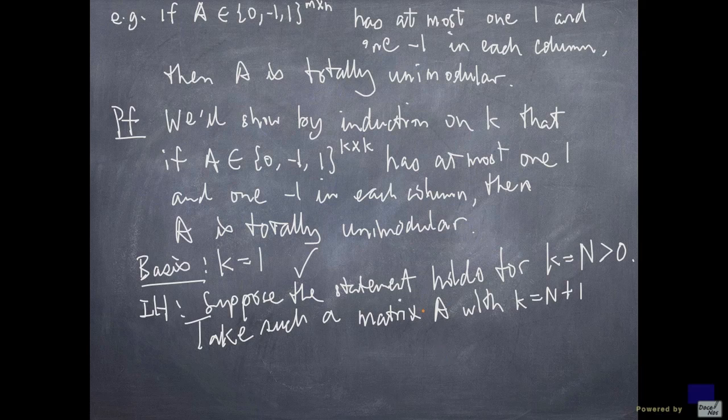So the only thing that we need to check is the matrix A itself. We want to show that the matrix A has determinant either 0, 1, or minus 1. Now, the first case is if A has a column of 0, then its determinant is 0. So that's the easy case.